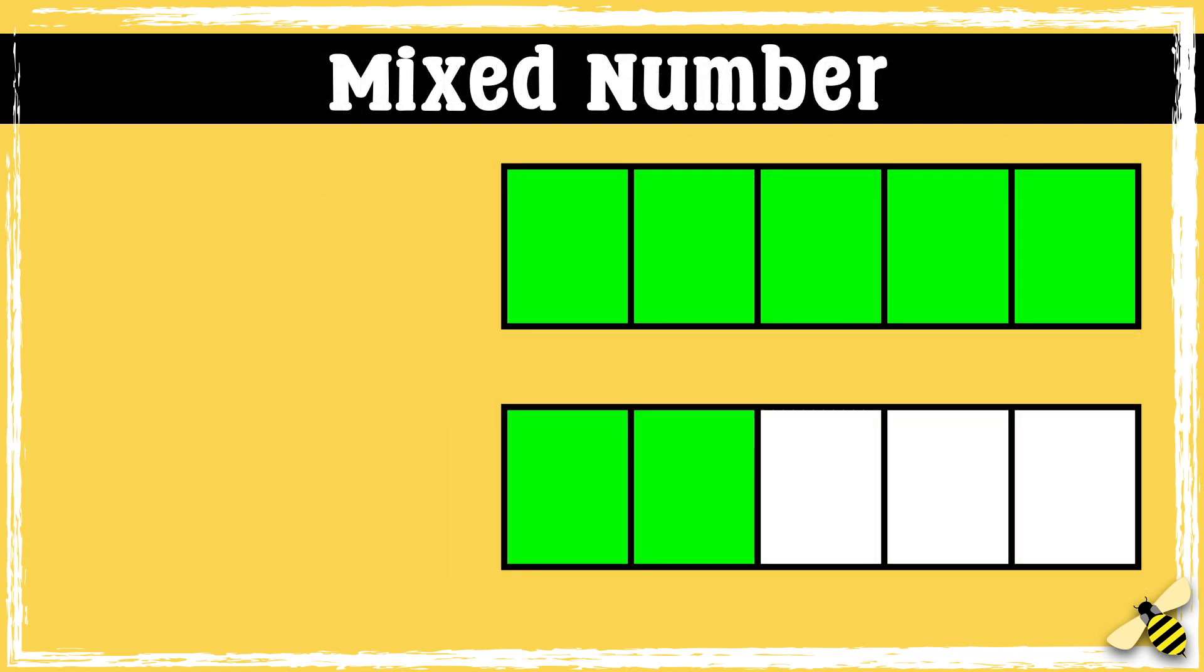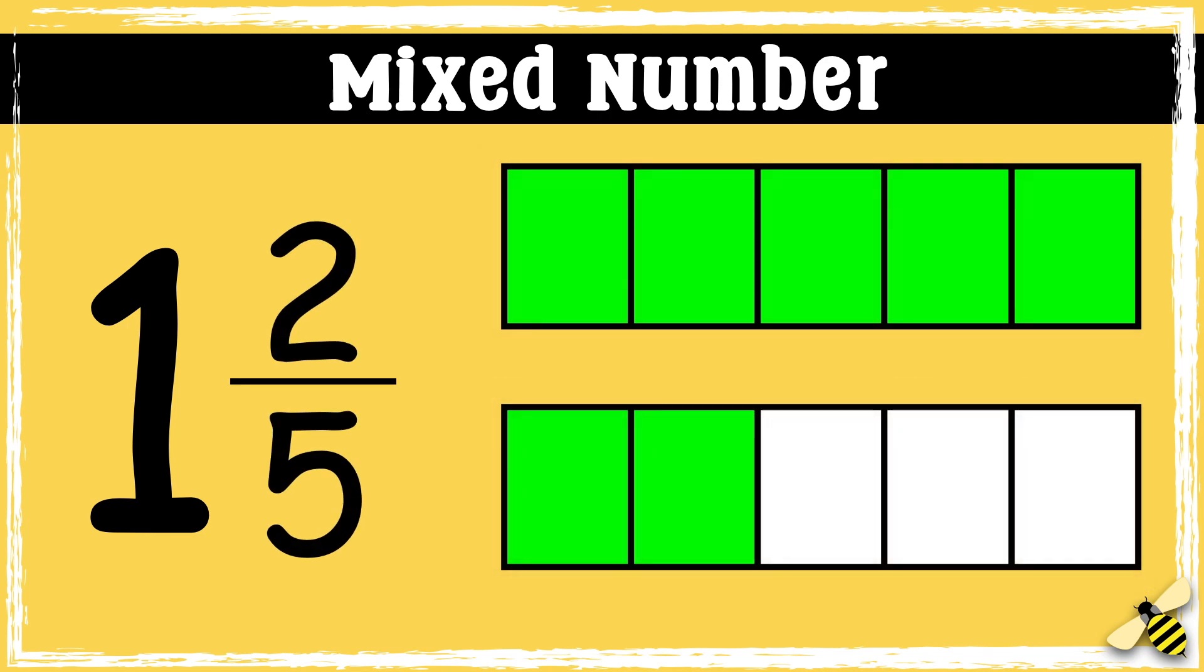So now let's look at it as a mixed number. So we have one whole, and then we have two-fifths left over. So we'd say one and two-fifths.